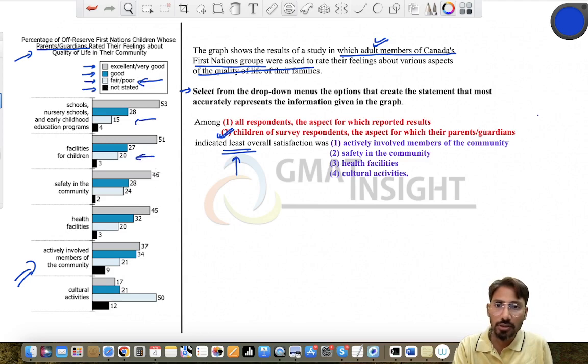Out of the first four or five, these are almost similarly long, but here this bar is the longest, and the activity here involved is the cultural activity. So the question was: indicated least overall satisfaction was actively involved in member? No, that's the second last one. No, safely involved in community?